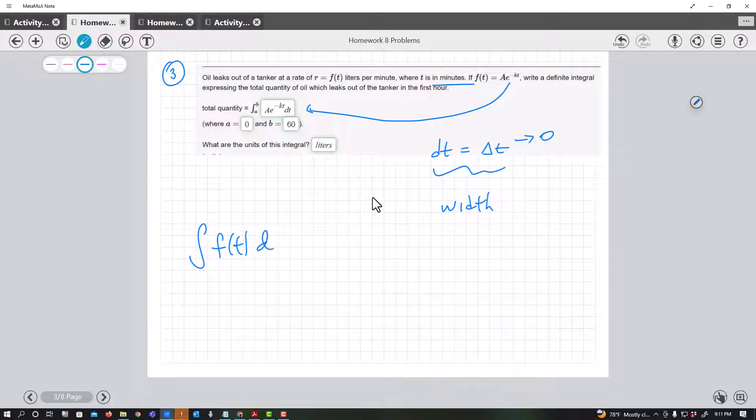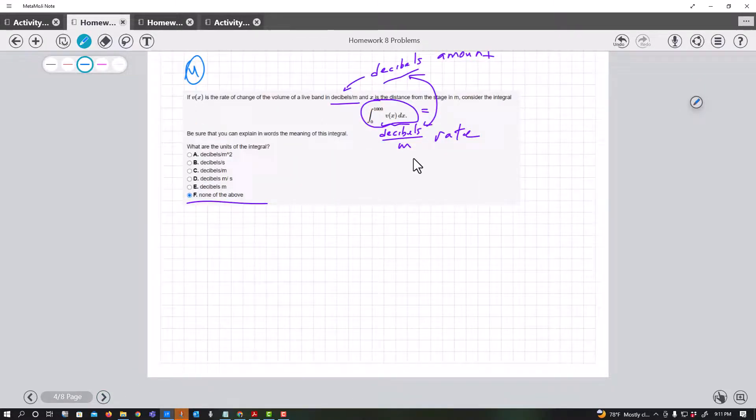When you work something like this, say f of t dt, this is the derivative, so this would actually be given in liters per minute. But then when you work this and you get an answer back to the original function, that's why you're back in liters. And that's what this is kind of asking you: can you figure out this actual rate? So it says the rate of change is in decibels per meter. Then if the rate is in decibels per meter and I work this out, I should get decibels, which I do not see here at all. None of the above.